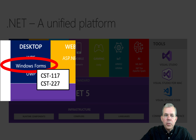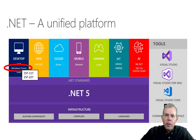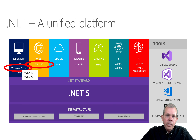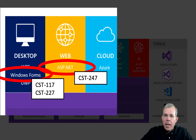Two classes that we teach here at the school are for Windows Forms. We learn how to use the basic C-sharp programming language, and we create applications that run on Windows. Windows Forms, or WinForms, are two classes that precede this one. What we're interested in right now is the class called ASP.NET, and the class name at GCU is CST247. What we try to teach here is how to create websites with C-sharp and the .NET framework.